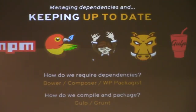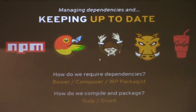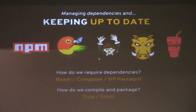And finally, keeping up to date: as you develop your software, you're going to produce more versions and more releases, and the same goes for these different repositories. There are different tools like Bower, Composer, and WP Packages that allow you to require these dependencies. If there is an update that's critical, you should make sure to include that within your next release so you don't have vulnerabilities. You can use Gulp and Grunt to compile, package, and keep things up to date.